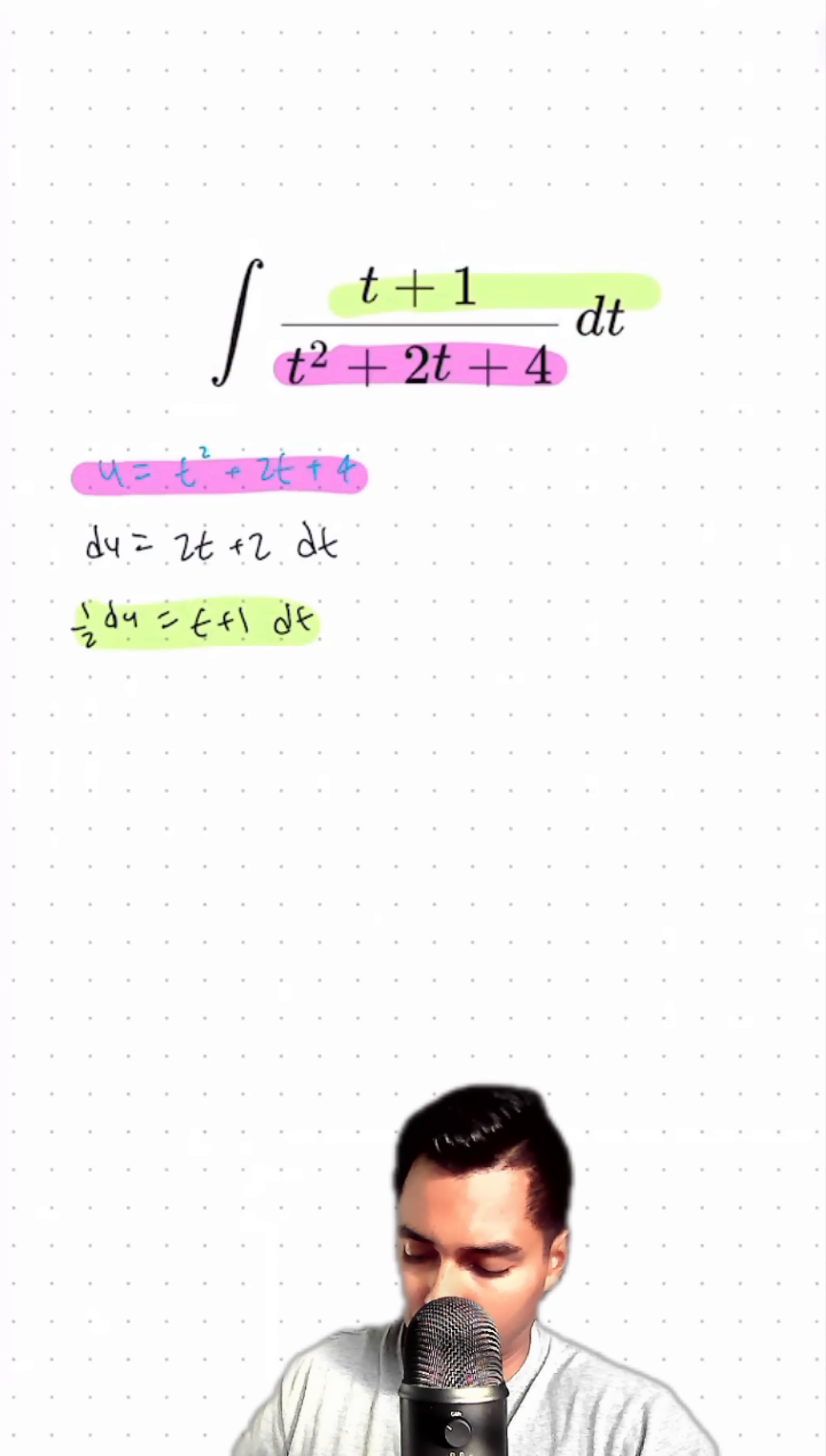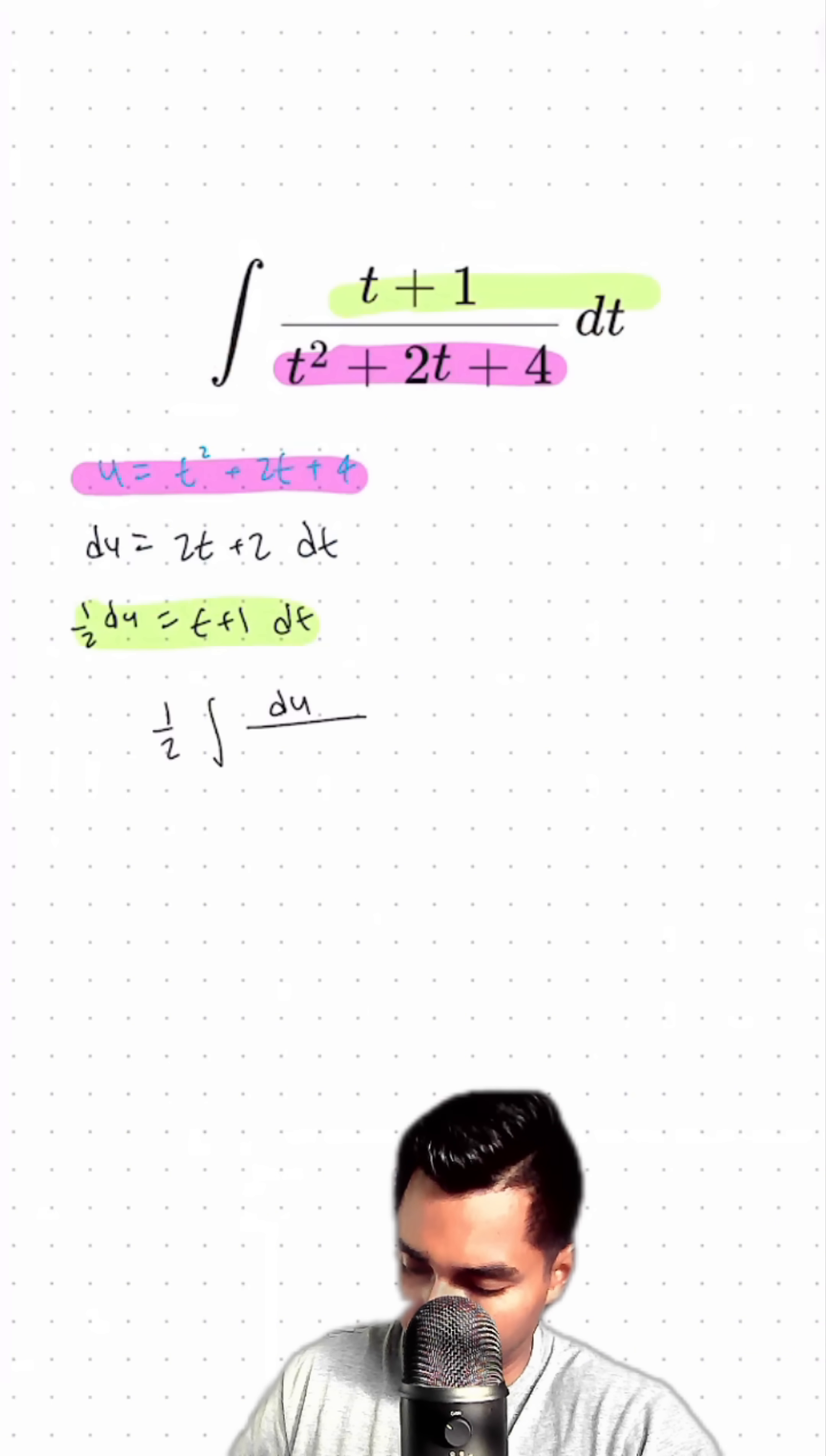Rewriting the integral in terms of u, we have 1 half times the integral of that is our du term divided by u.